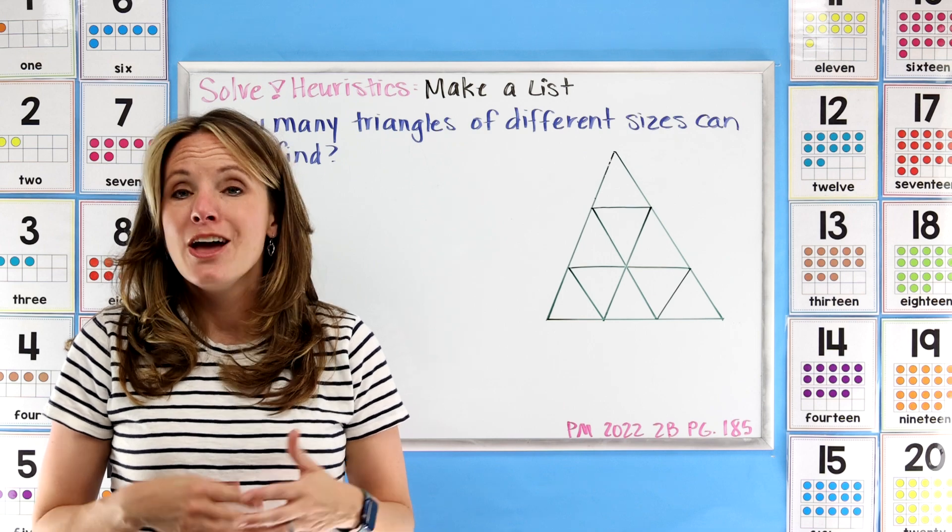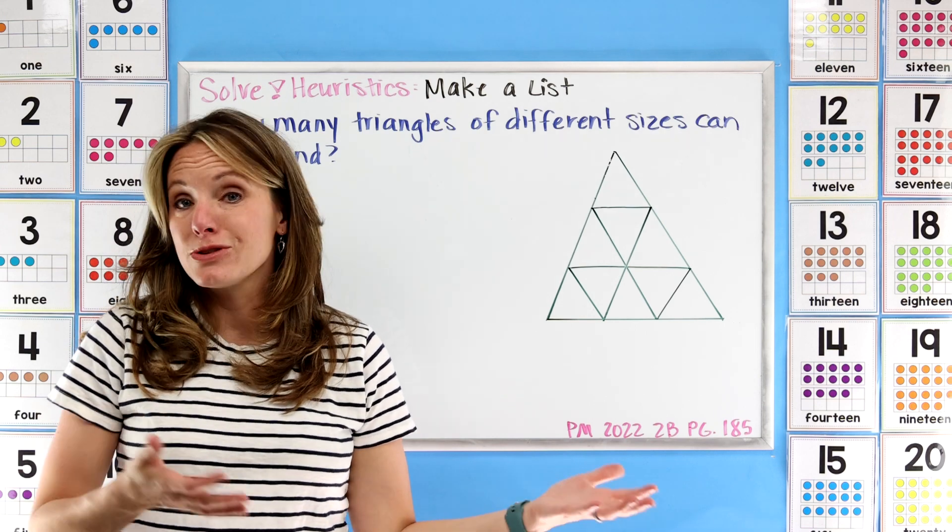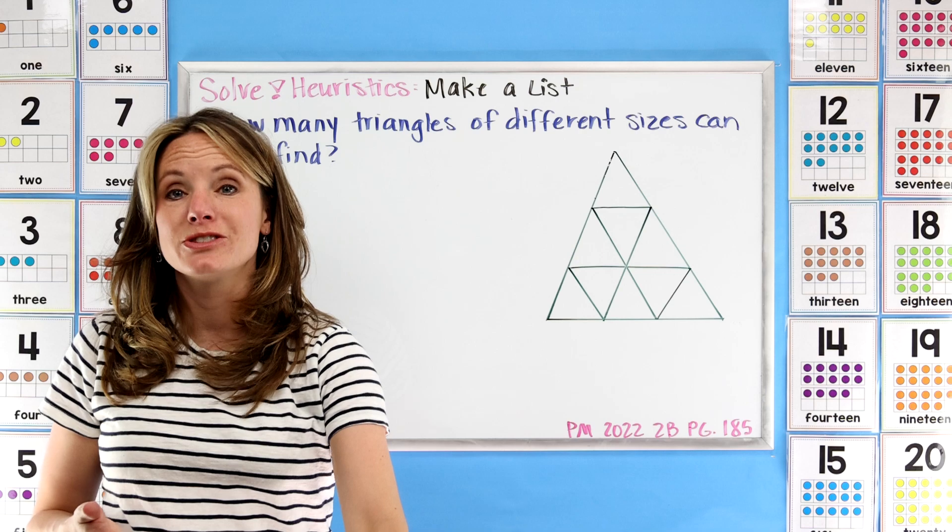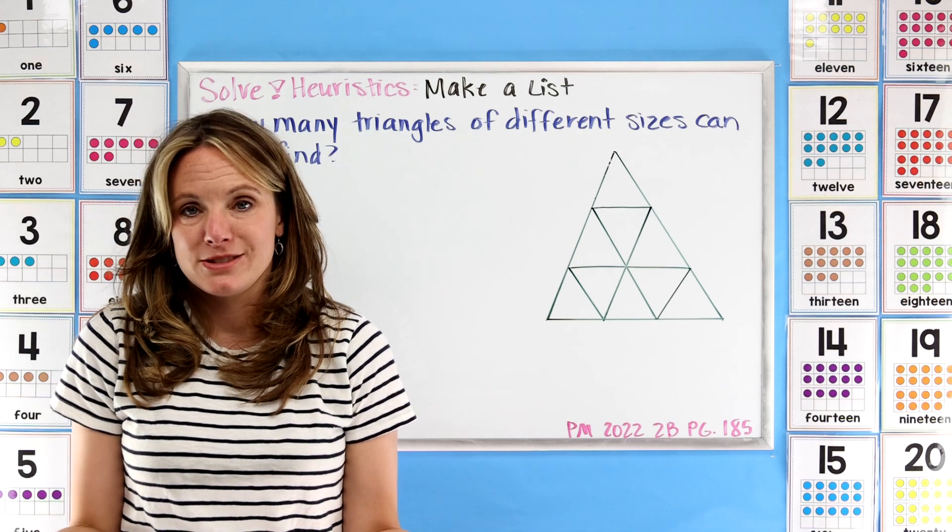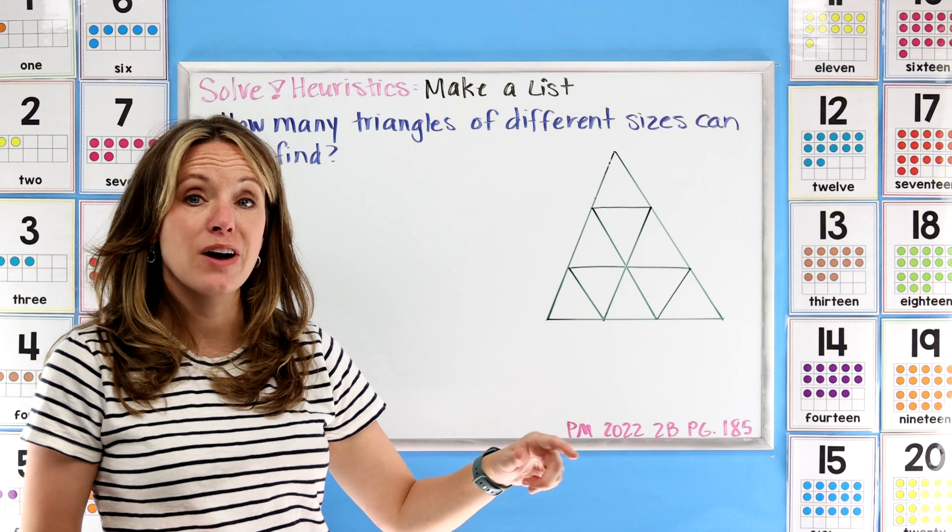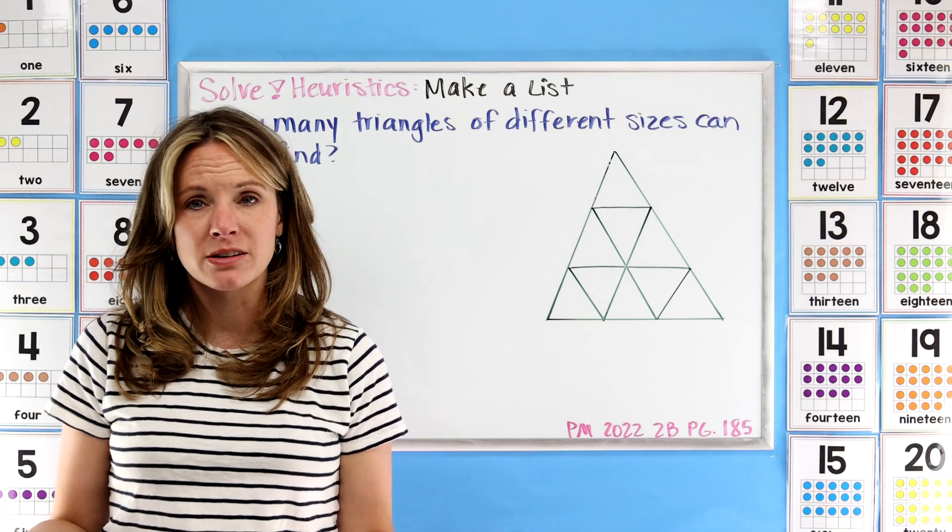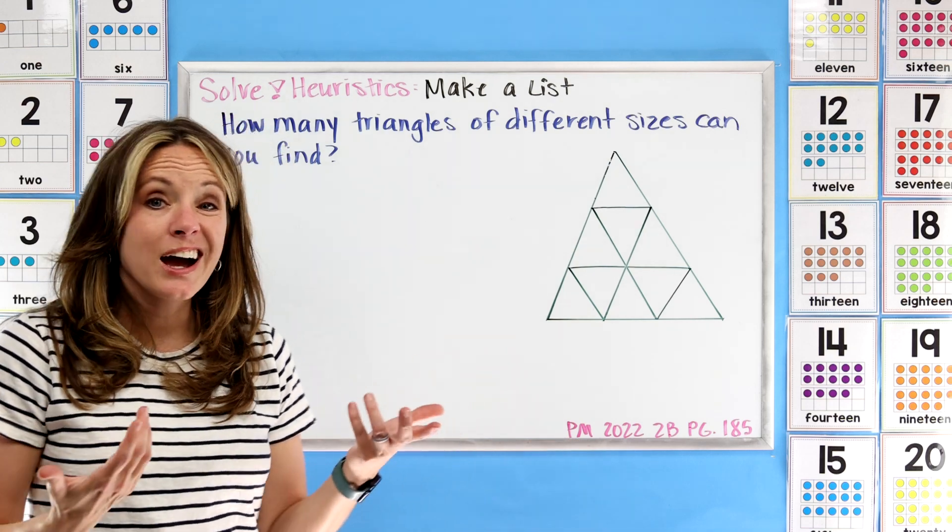The very first thing we need to do in the four-step problem solving method is to understand: What are we being asked to do? We're being asked to look at this figure and find all the different types of triangles.